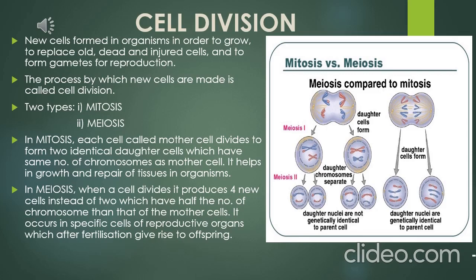In mitosis, the cell undergoing division is called the mother cell. It divides to form two identical daughter cells, which have the same number of chromosomes as the mother cell. Mitosis helps in the growth and repair of tissues in organisms.